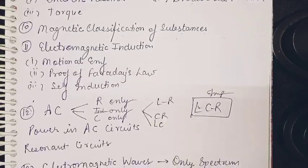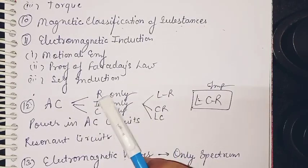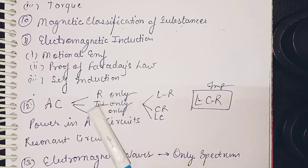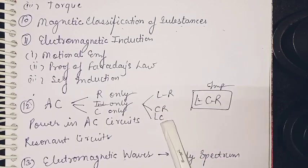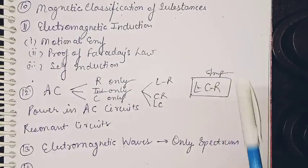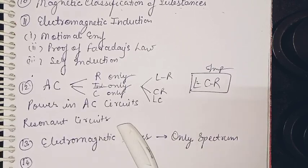Then comes alternating current. You have to do all the circuits that I have mentioned here: circuit containing resistance only, circuit containing inductance only, capacitance only. Then LR circuit, CR circuit, LC circuit, and LCR. These circuits are also important for the numerical part. Then resonance circuits also.